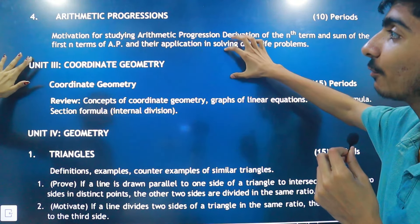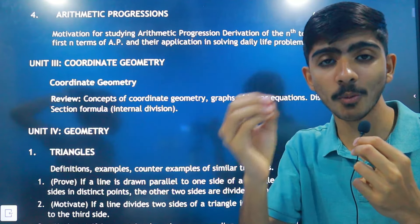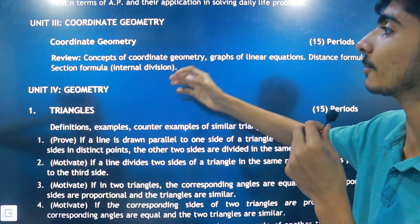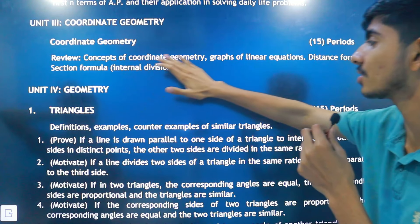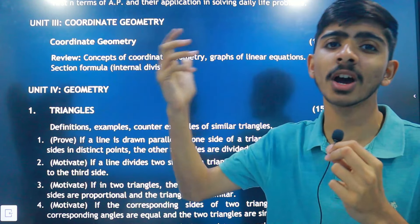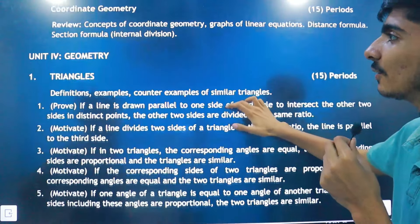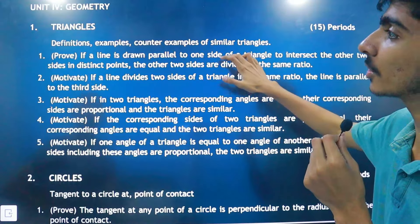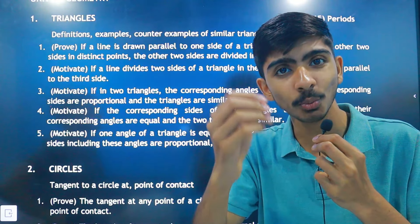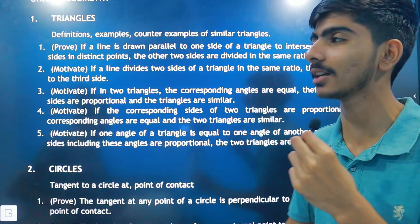In Arithmetic Progression, which is the fifth chapter, there are word problems. Three formulas are very important here — practice them. In Coordinate Geometry, the key concepts include graphs of linear equations, distance formula, section formula, and midpoint formula. These are very important formulas. You need to practice them regularly in maths, otherwise you will forget them quickly.